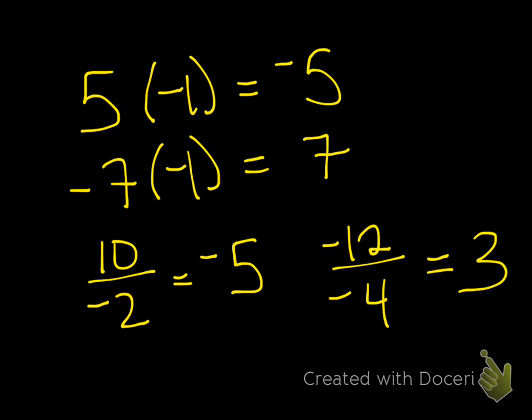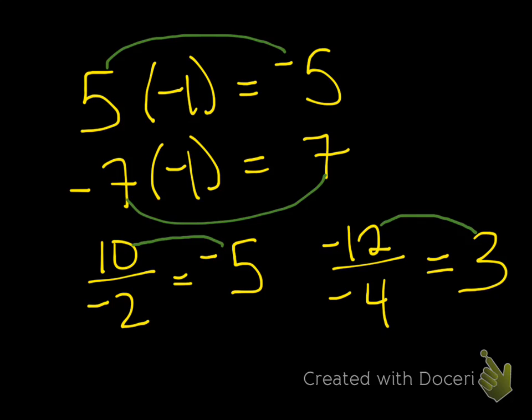So what happened to each one of those numbers? It went to the opposite. 5 and negative 5 are opposites; 7 and negative 7 are opposites. The sign changes. So the same thing is true if you're multiplying across an inequality sign.